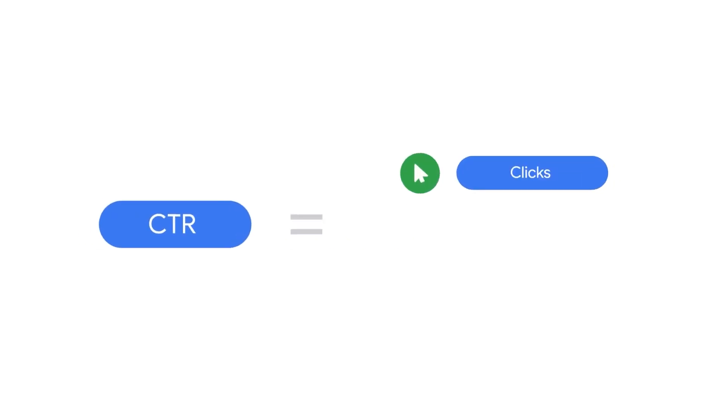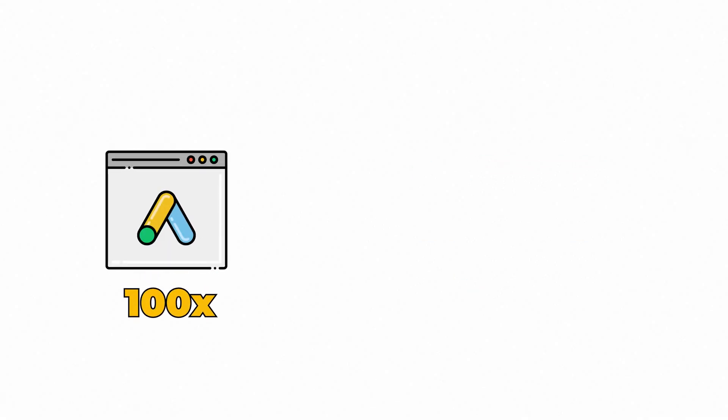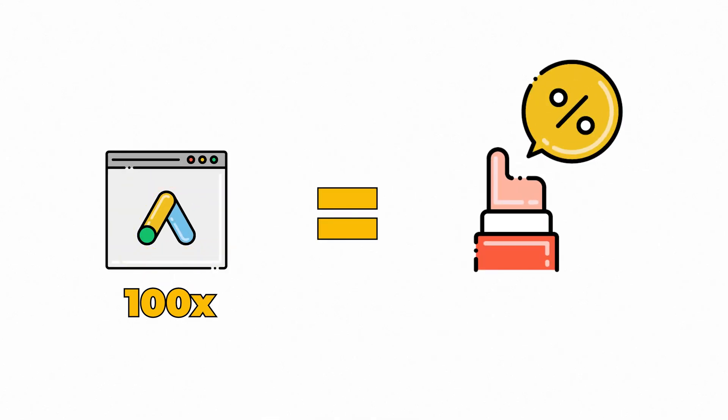Just to remove any confusion, especially if you're new to Google Ads: when I talk about click-through ratio, I'm talking about the metric that records the percentage of times your ad is clicked on versus the number of impressions — the number of times your ad is shown. For example, if your ad is shown 100 times and you get 10 clicks, you would have a click-through ratio of 10%. But that is not the full story.